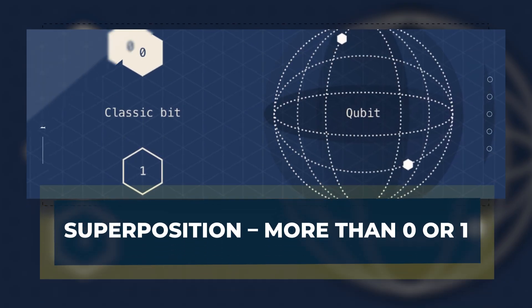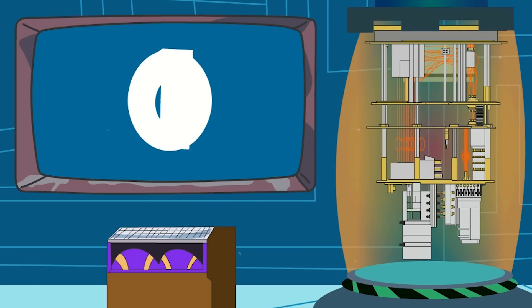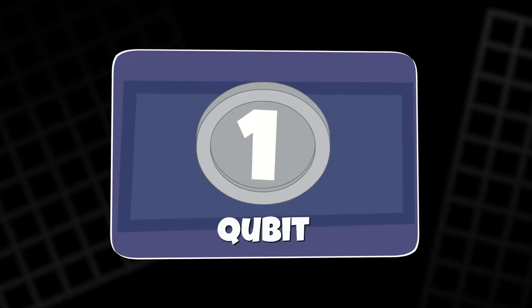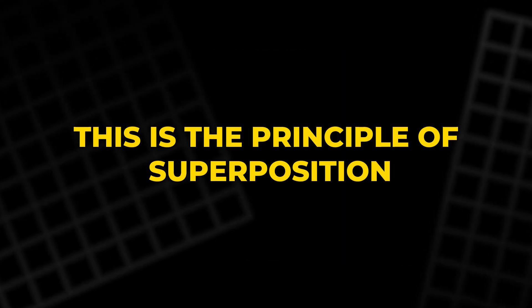Superposition: More Than Zero or One. A bit is simple. It's either a zero or a one, like a light switch that's off or on. But a qubit can be zero, one, or both at the same time. This is the principle of superposition.